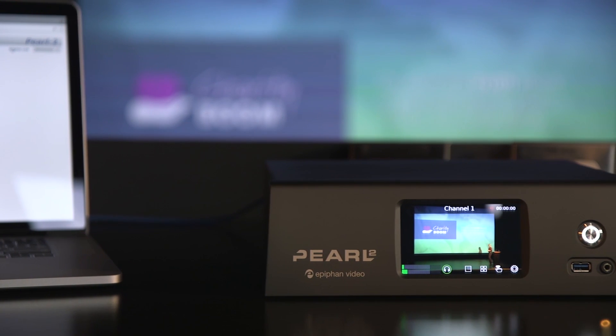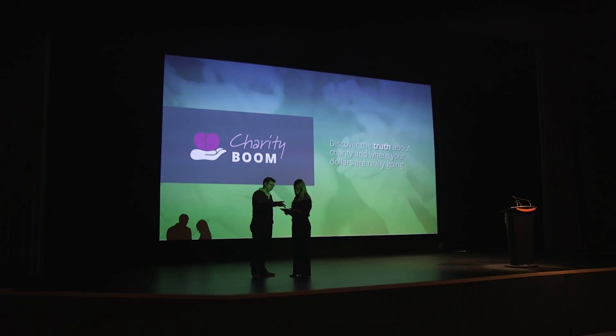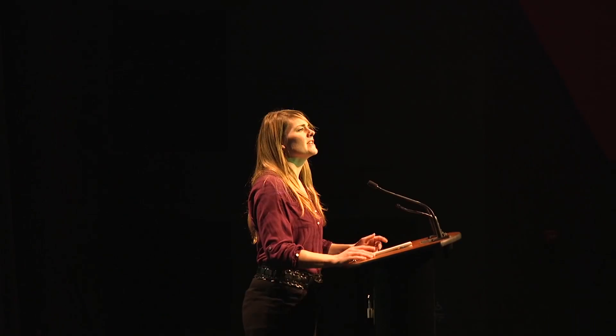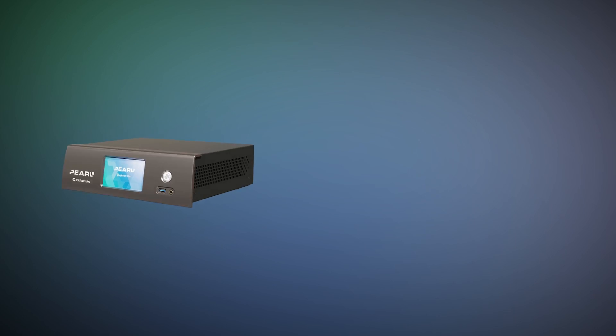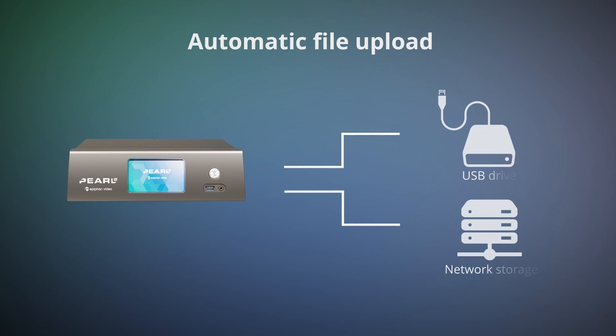One other feature I haven't told you about yet is the HDMI video outputs on the back of Pearl 2. These can be used to send your video anywhere — you may want a larger display at the front of house, or you may want a larger program monitor. Either way, it's yet another tool for creating better video productions using Pearl 2. When your event is over, we've made file offloading simple by offering automatic file upload, which allows you to transfer your recorded files to a connected USB drive or a networked file server.